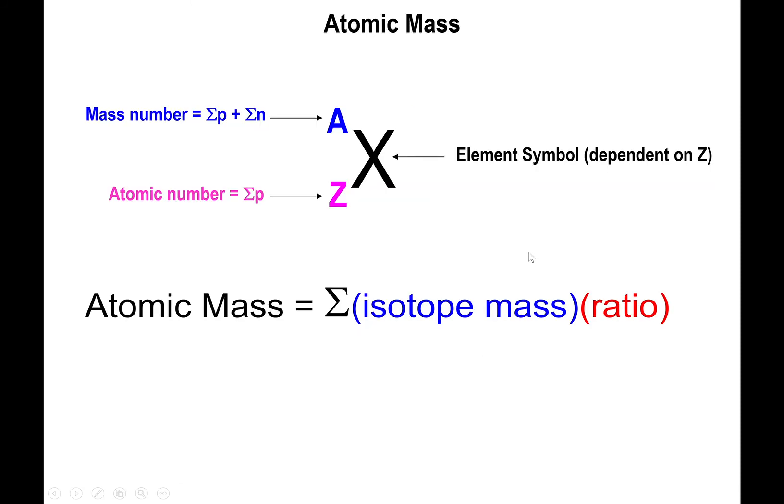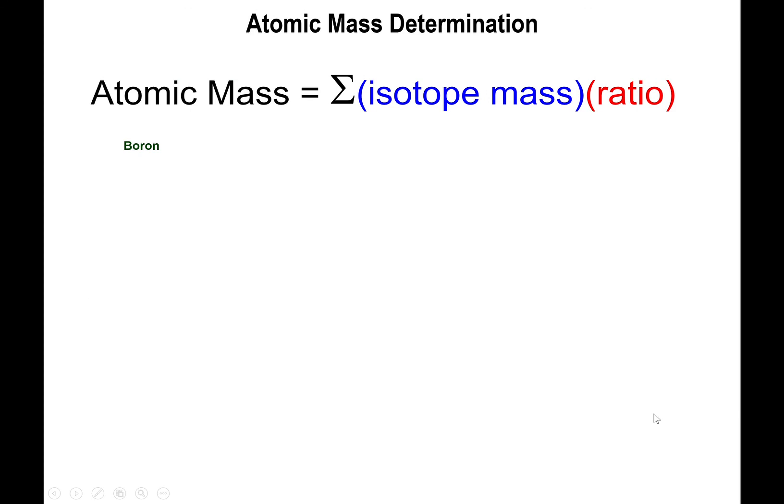And so, as I was saying earlier, the atomic mass of the element is actually the average mass based on the different natural isotopes that the element possesses and the abundance of those elements accounted for. Now, the mass, the atomic mass is given by this formula, which is the summation of the isotope mass times something I call the ratio. And the ratio is simply the abundance percentage divided by 100%.